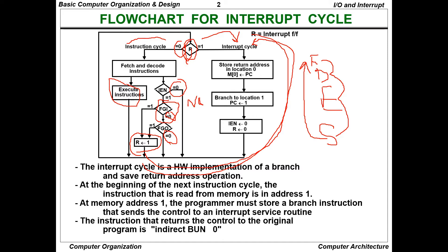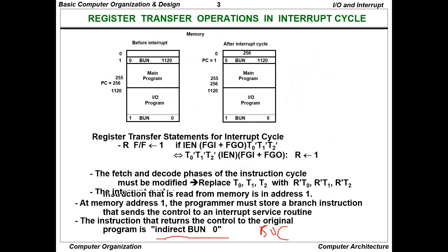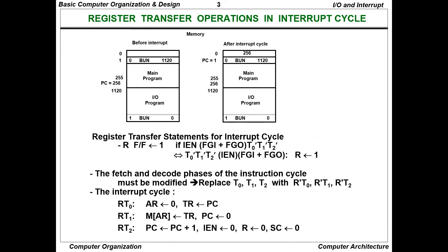The instruction that returns control to the original program is indirect BUN. BUN stands for Branch Unconditional. You can see here before and after the interrupt cycle. It starts at the 0th location, and at the first memory location PC is at 1. So at location 0: BUN 1120, main program at 255, PC points to 256.